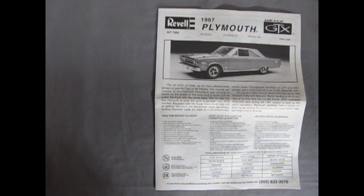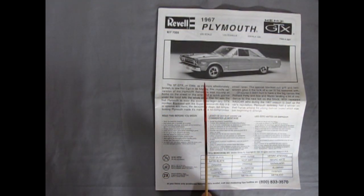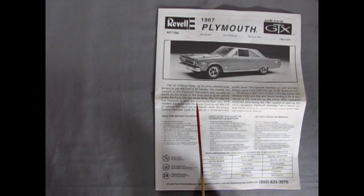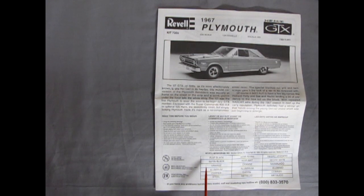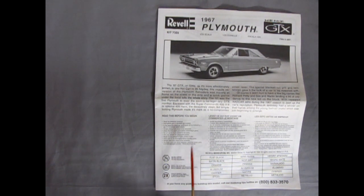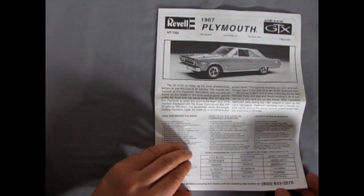And here's our Plymouth instruction sheet. And again it's got a photograph of the built-up model as well as the history of it. And then down here it's got all the color call outs: flat black, satin black, orange, aluminum, copper and steel. And of course our infamous read this before you begin.